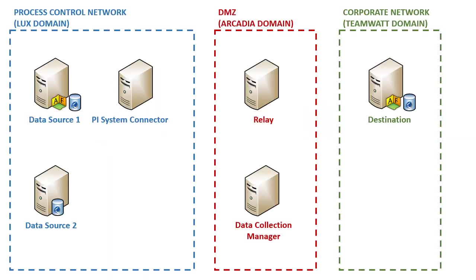Let's go ahead and install PI System Connector. To begin with, let's review our architecture layout. We have three untrusted domains: the Process Control Network in the LUX domain, the DMZ in the Arcadia domain, and the Corporate Network in the TeamWA domain.